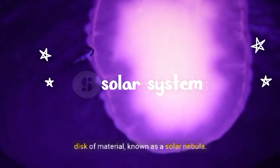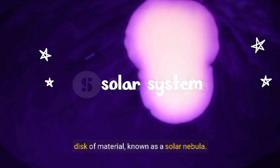As the cloud collapsed, it spun into a swirling disk of material known as a solar nebula.